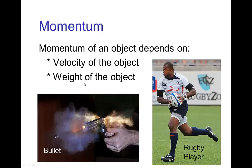You can think about it as being related to the weight of the object. Something like a bullet has a large momentum mostly due to its high velocity, because it doesn't weigh very much. On the other hand, a rugby player, even though he's not moving nearly as fast as a bullet, may actually have more momentum than the bullet simply because he is so much more massive — he weighs so much more.